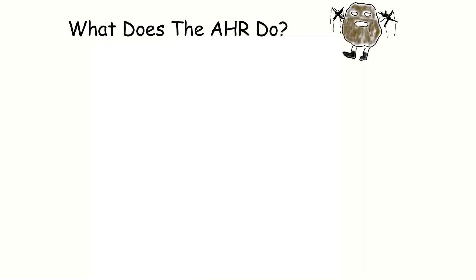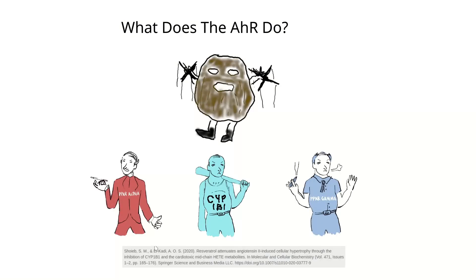So what does the Aryl hydrocarbon receptor do exactly that causes all these changes? It is the master controller of fat metabolism. PPAR-alpha, traditionally known as the master regulator of fat metabolism, is actually a direct target of the AHR — so the AHR controls PPAR-alpha. It also controls a gene called CYP1B1, which oxidizes polyunsaturated fats. Those oxidized polyunsaturated fats, such as 12-HETE, activate PPAR-gamma, the other master regulator of fat metabolism. So the AHR is the puppet master controlling fat metabolism.